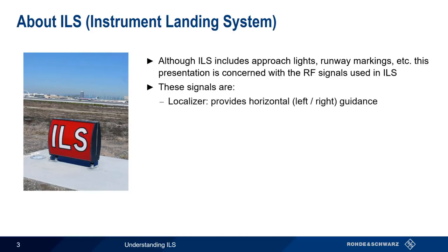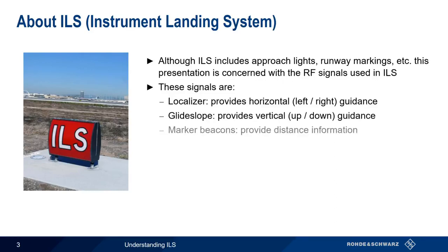The localizer signal, which provides horizontal or left-right guidance. The glide slope signal, which provides vertical or up-down guidance. And marker beacons, which provide information regarding the distance to the runway. Marker beacons can be outer, middle, or inner markers.